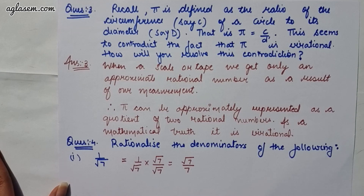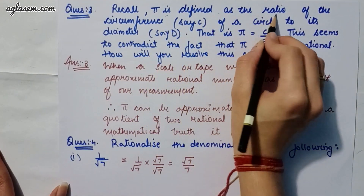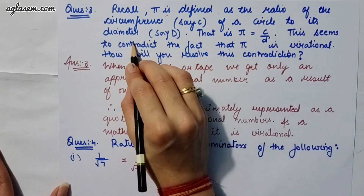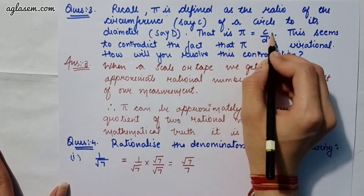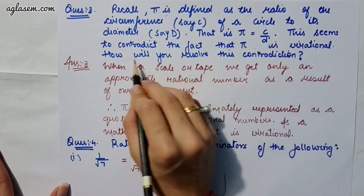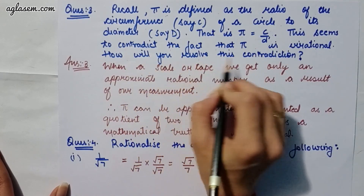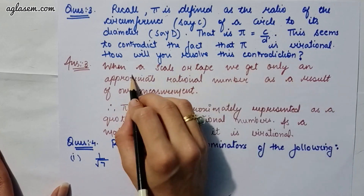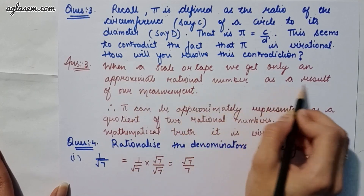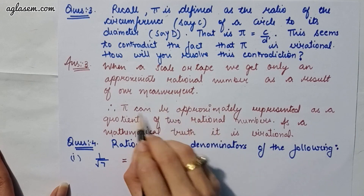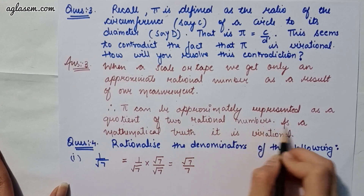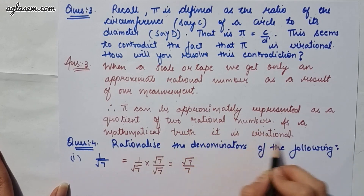Moving to our third question, which says: recall, pi is defined as the ratio of the circumference, say c, of a circle to its diameter, say d — that is, pi equals c upon d. This seems to contradict the fact that pi is irrational. How will you solve the contradiction? The answer is: when we measure using a tape, we get only an approximate rational number as a result. Therefore, pi can only be approximately represented as the quotient of two rational numbers, but as a mathematical truth, it is irrational.